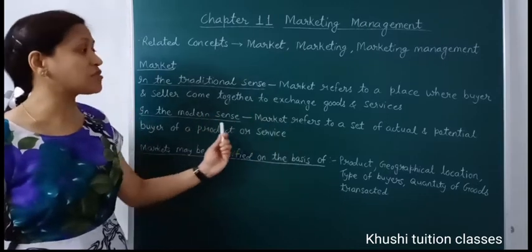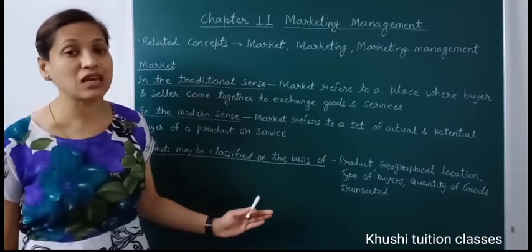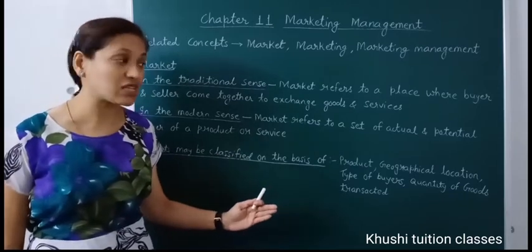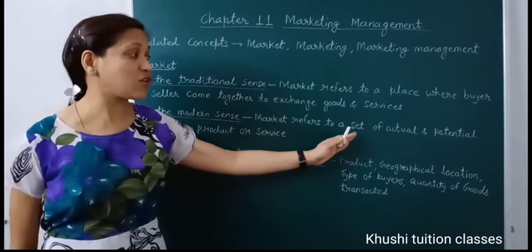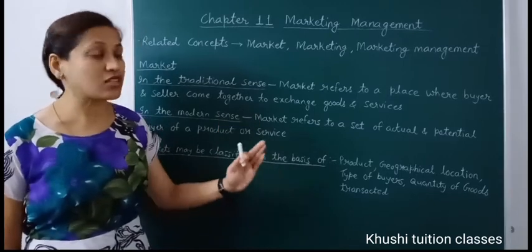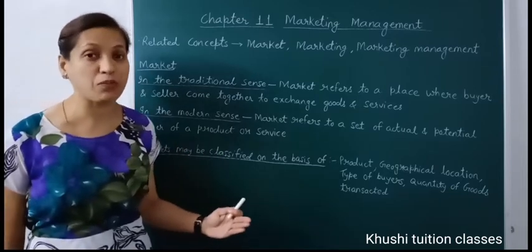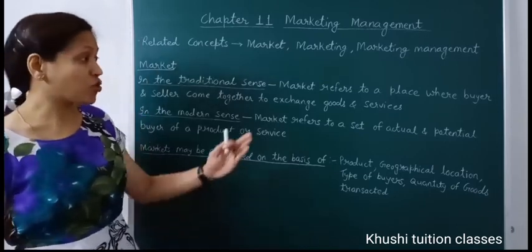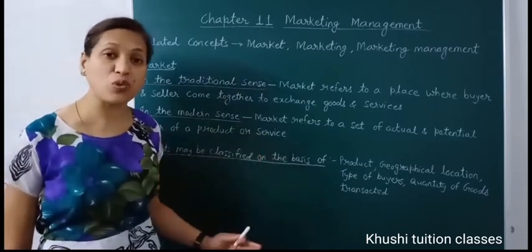In the modern sense, market is not a place because online sale-purchase transactions can also happen, online services can be provided, and buying-selling transactions can happen over the telephone. Actual buyer means the person who has actually bought the product or the service. Potential buyer means a person who is searching for a product or service, comparing the prices of different brands. So potential buyers are also included in the modern sense definition of market.